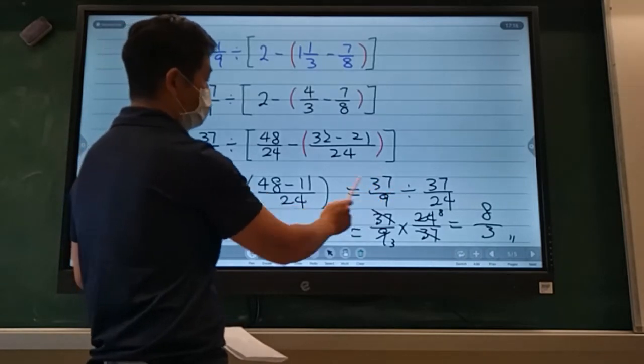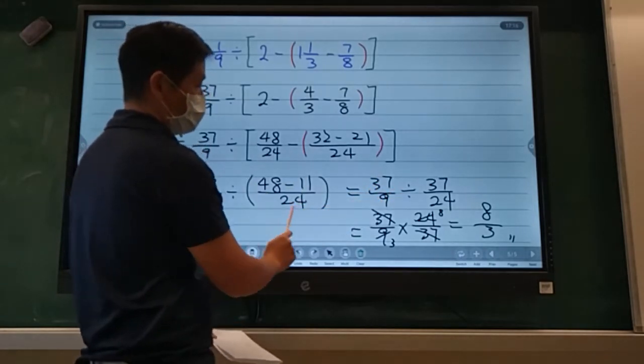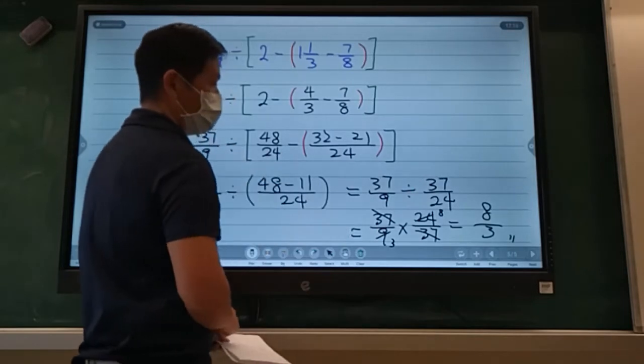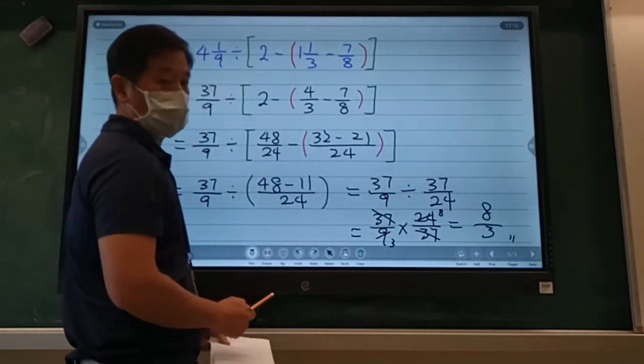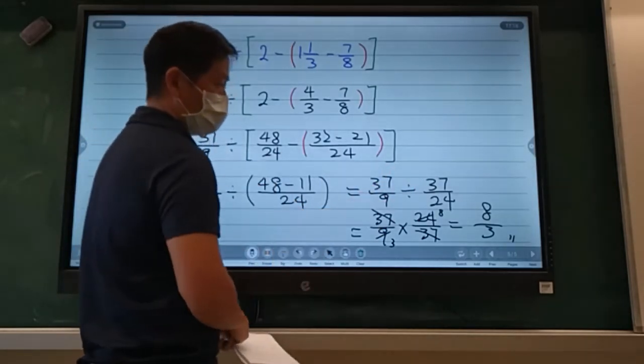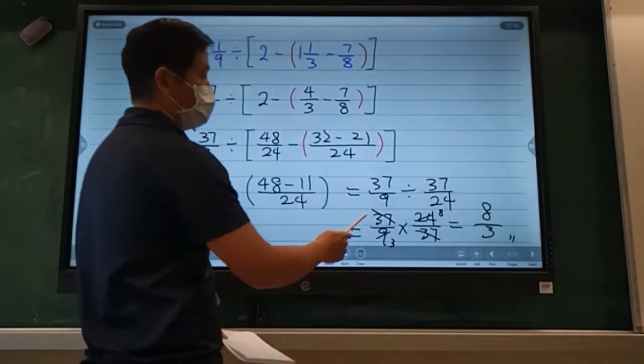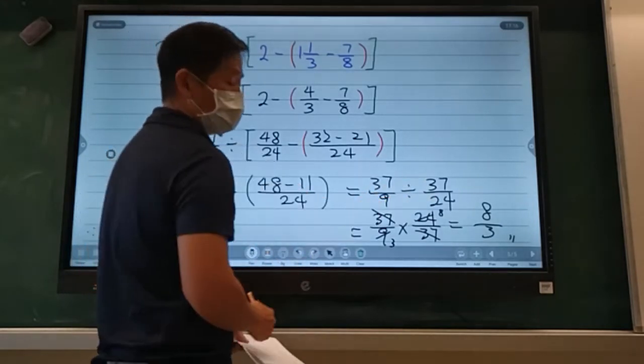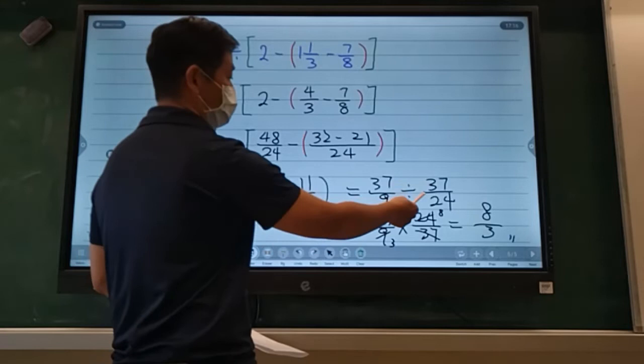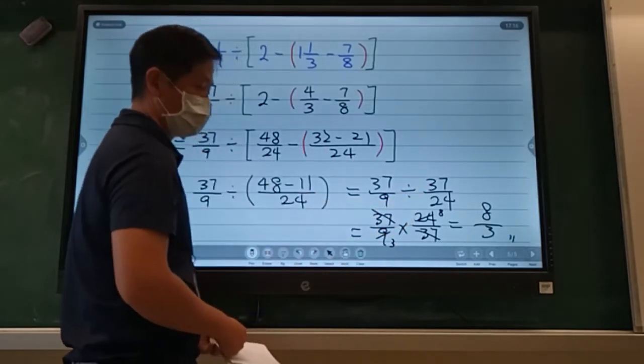37 over 9 divided by what's inside the round bracket, which is 37 over 24. And then if you know, when you divide by a fraction, when you divide a fraction, the fraction on the right or in the back, you need to flip it over and change it to a multiplication.